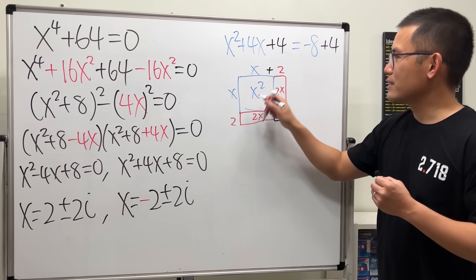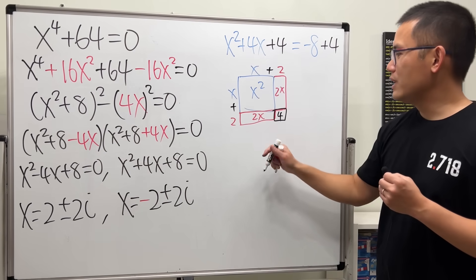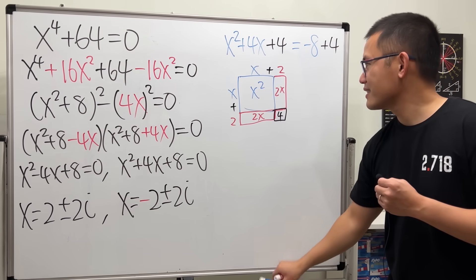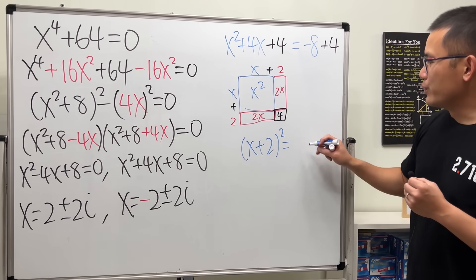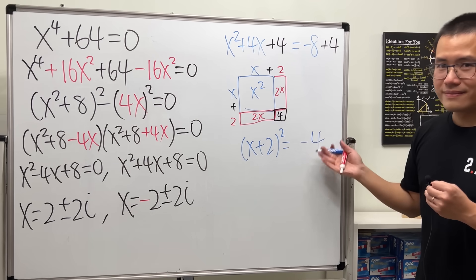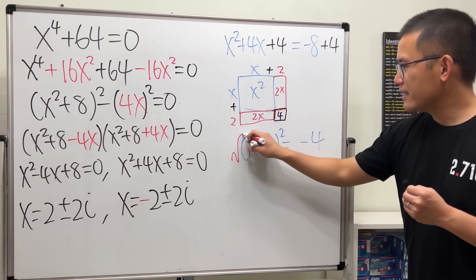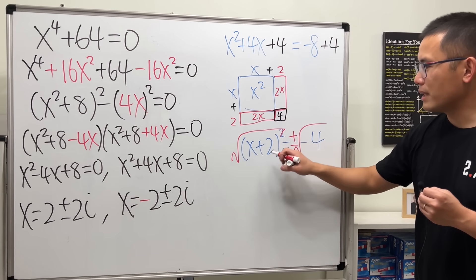And, that's equal to negative 4. And, then, from here, take the square roots to both sides. And, don't forget the plus or minus.